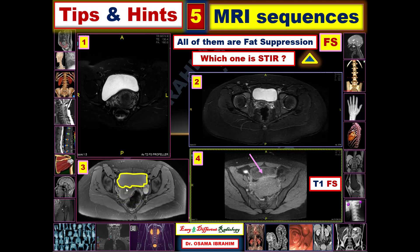Image number four is T1 fat suppression due to water appearing as low signal in T1. If you look at this other image, the urinary bladder shows intermediate signal — not bright like T2, not dark like T1. The gluteus muscles and other muscles appear brighter than the bones, such as the iliac bones, and the fat is suppressed.